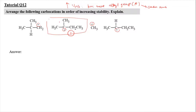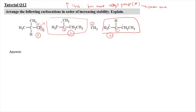That structure is the most stable, number one. Number two is the one where C⁺ is attached with two carbons. The second most stable is that one, and the third most stable is the one where C⁺ is attached with hydrogen — so it's attached with only one carbon. The least stable, number four, is the one that doesn't attach with any alkyl group.